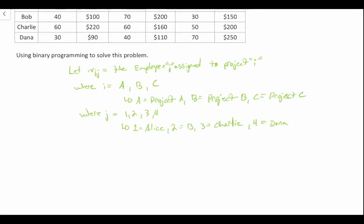Xij takes on values of one and zero, since we're dealing with a binary variable here.